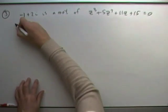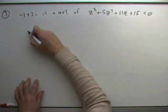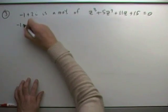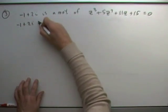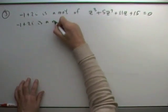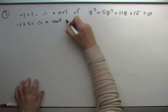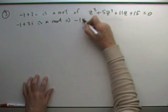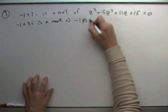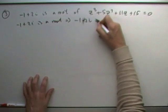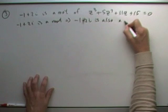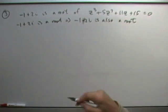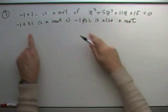If you know one complex root, then straight away you know the other. If negative 1 plus 2i is a root, that means that negative 1 minus 2i is also a root. So that's two of the roots.